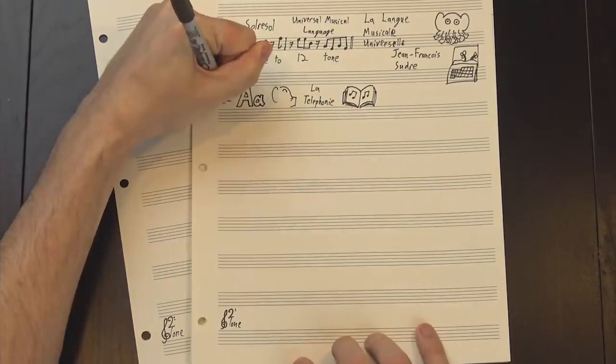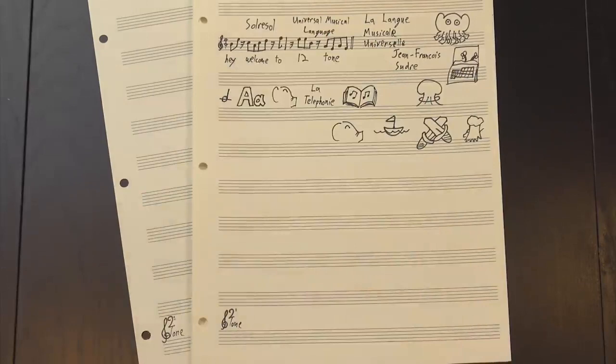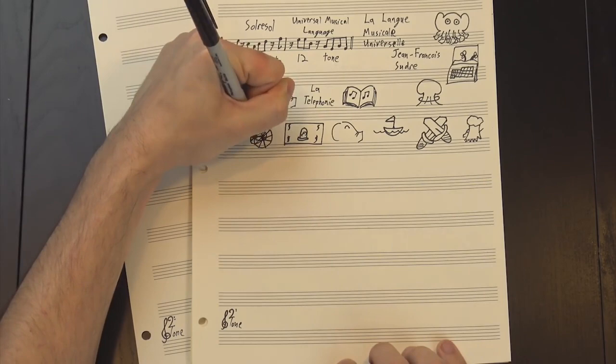This wasn't really a new language, though. It was more like a code, and it found its home where most codes do, the military. Sudre tried to sell his system to the French army, and later the navy, but despite early interest, they never actually paid him for it. He even built a series of properly tuned cannons in order to increase the volume of his transmissions, but to no avail.